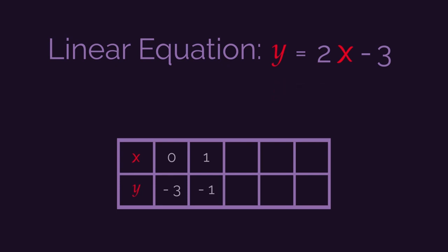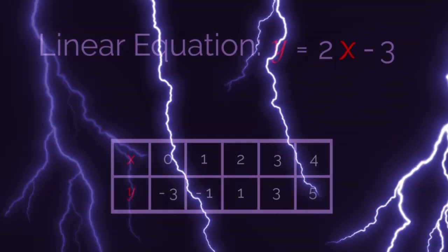So now it's your turn. Work out the remaining three y values for the corresponding x values. Pause the video. Work out the answer and click play when you're ready to check. Did you get them right? 1, 3, and 5.